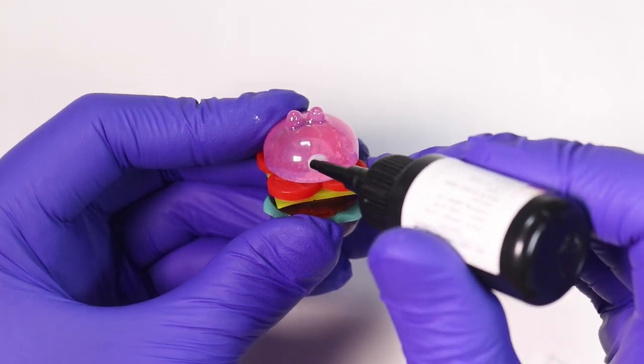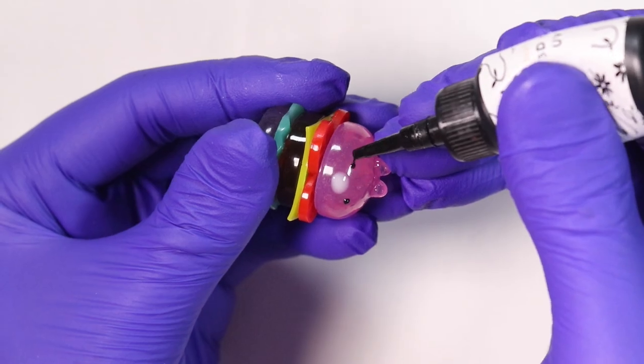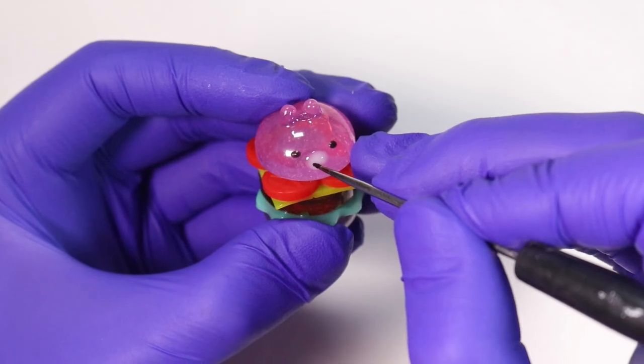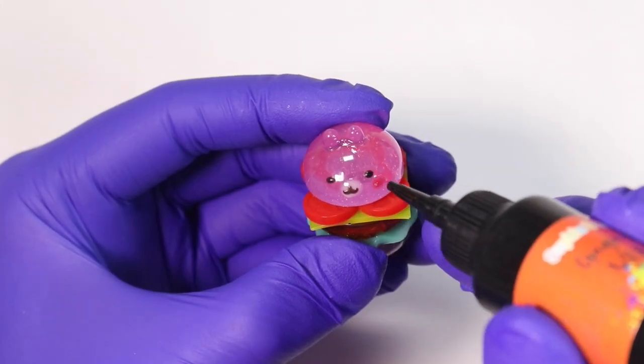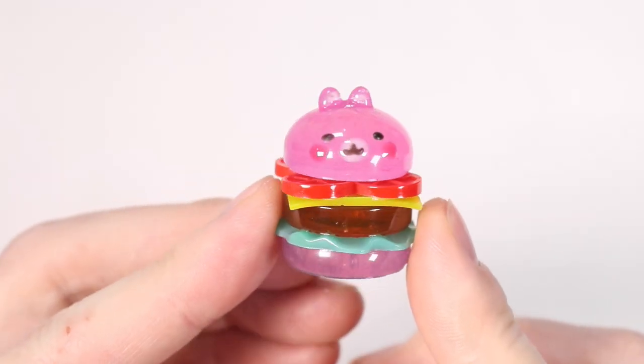And then using the white resin, we're going to give it a white nose, some dot eyes, and a W line smile, along with some red blush, and let that cure. And here we have our rabbit burger.